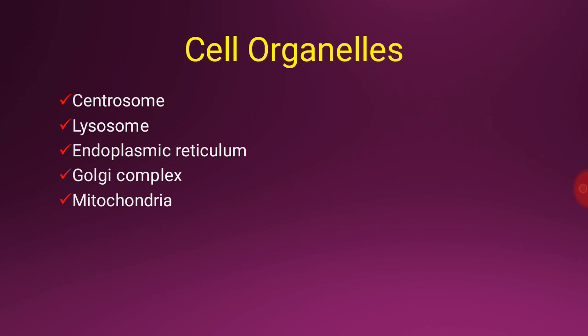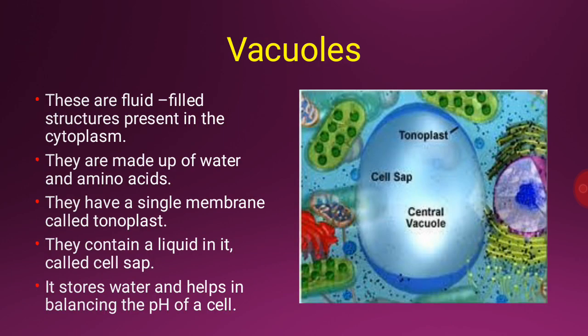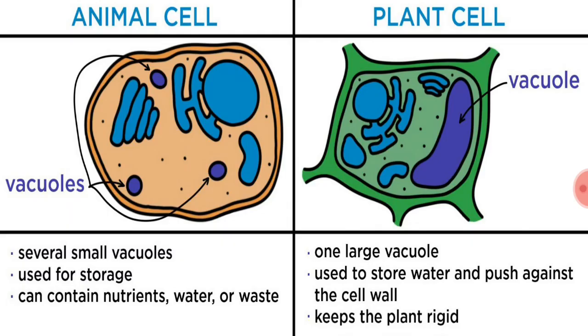Today we will continue with the same topic. The next organelle is vacuoles. These are fluid-filled structures present in the cytoplasm. They are made up of water and amino acids and have a single membrane called the tonoplast. They contain a liquid called cell sap. It stores water and helps in balancing the pH of a cell. Vacuoles are present in both plant and animal cells, although the size varies between the two.